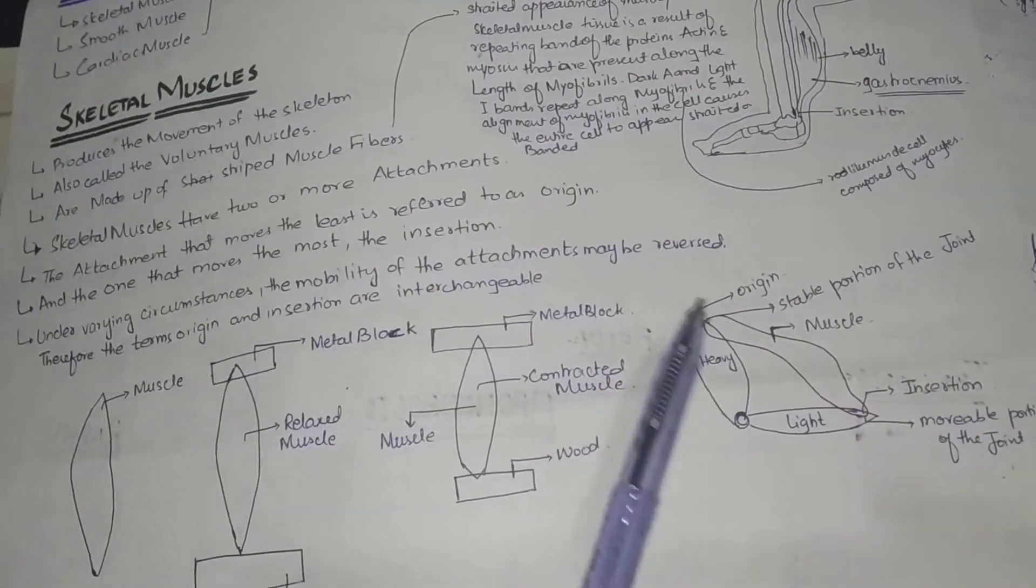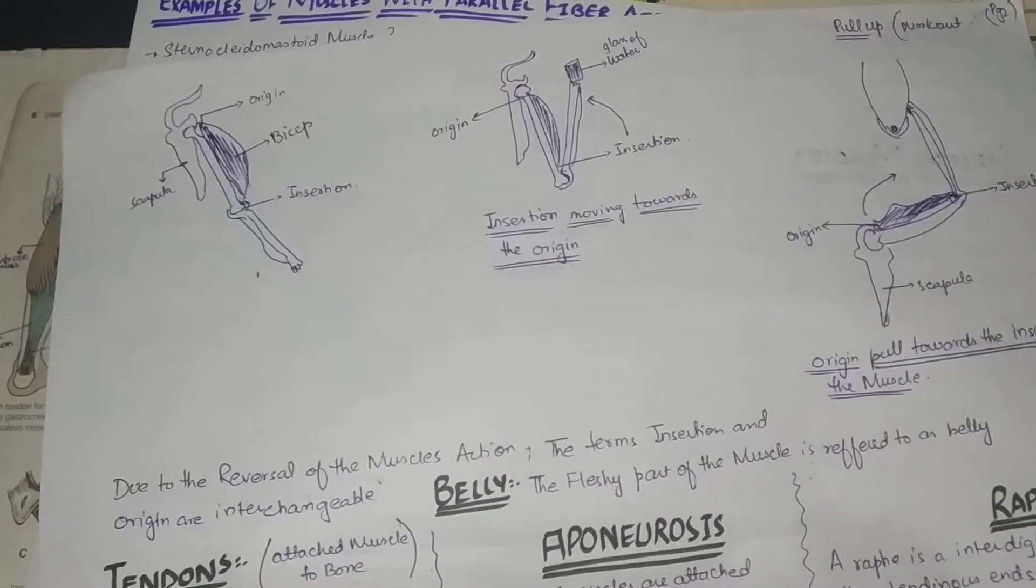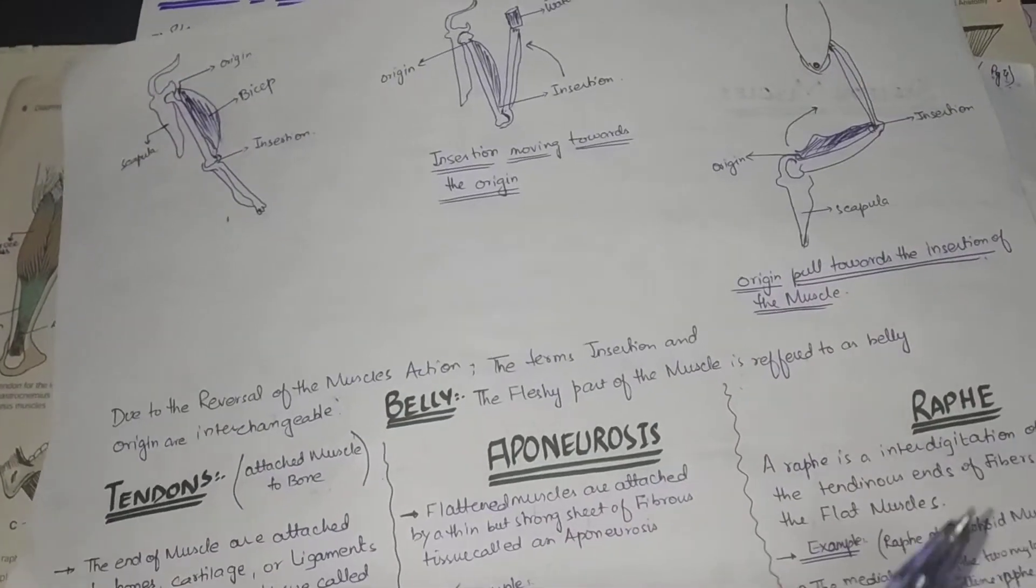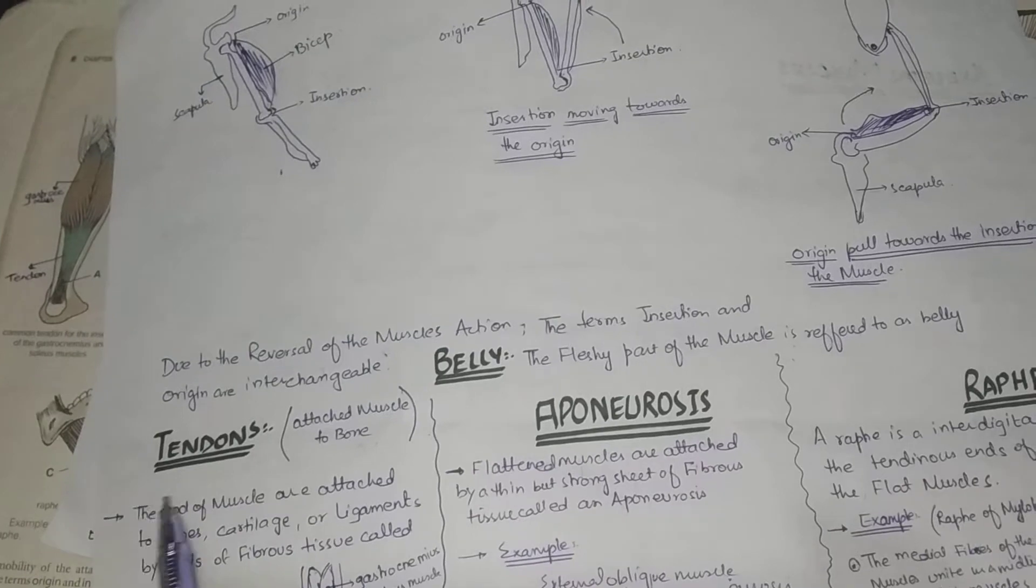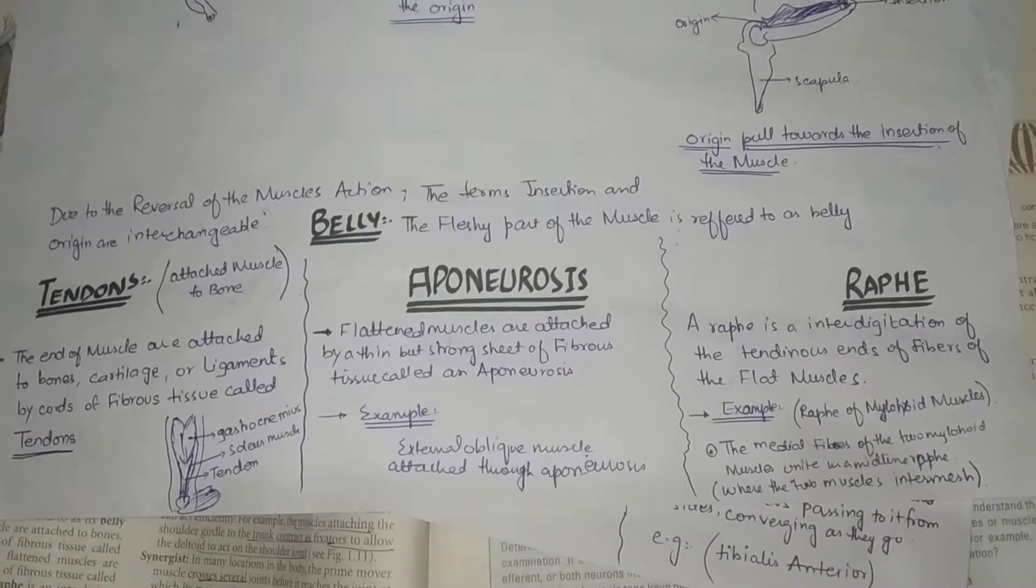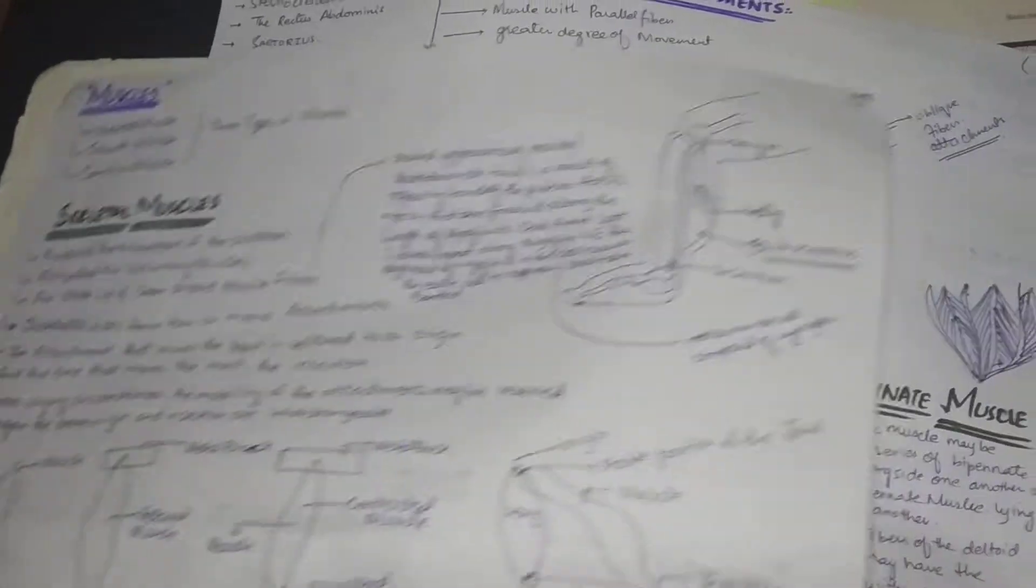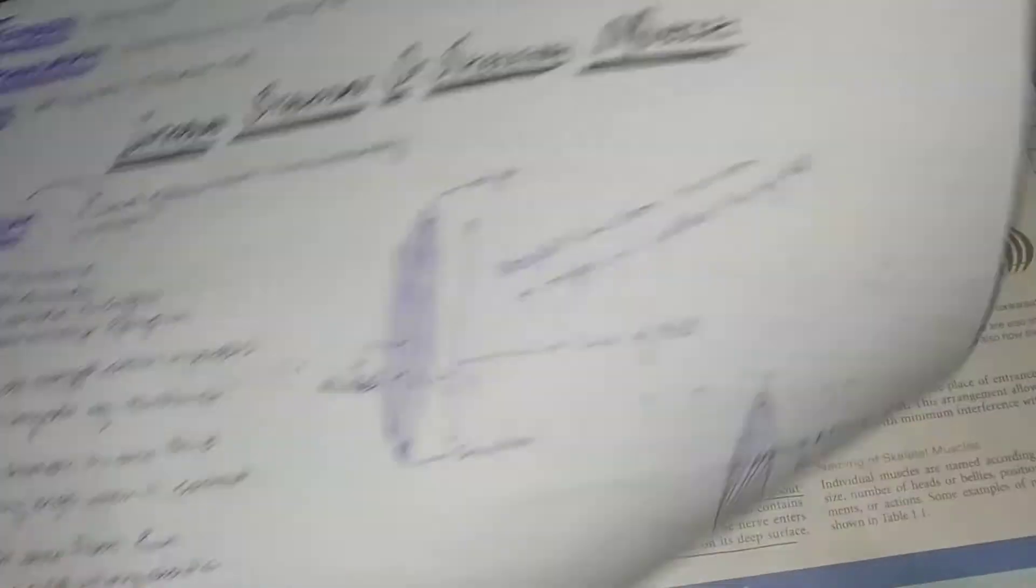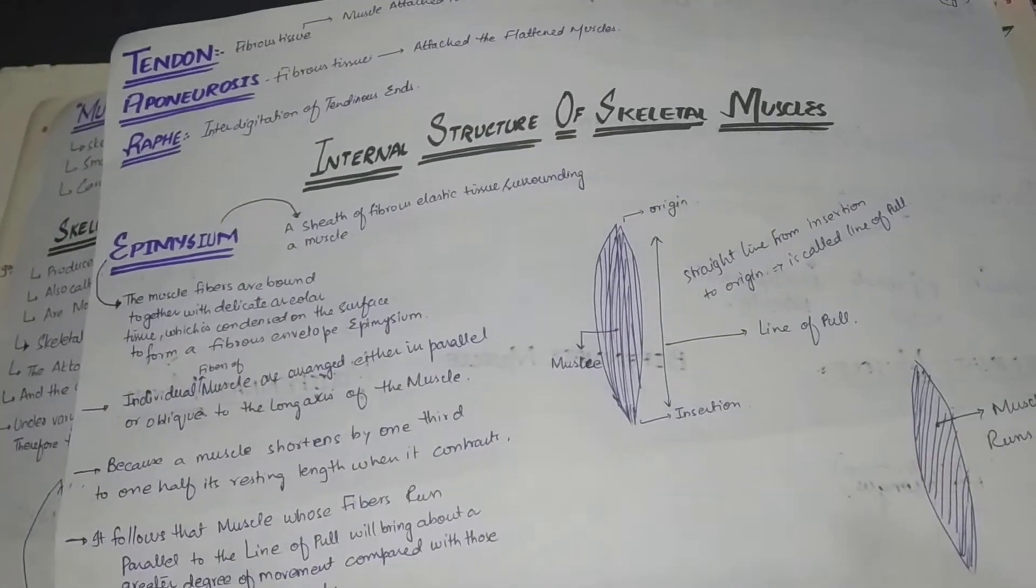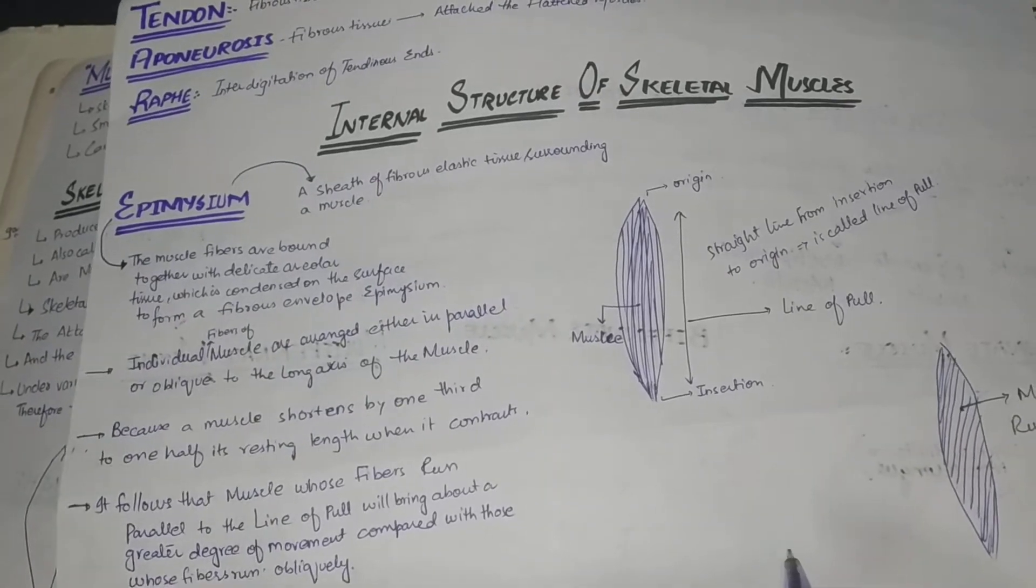In which direction the insertion and origin are interchanged. Then we have some terms used in Snell like tendons, aponeurosis, raphe. I have an example that I share with you. Then I have muscles attached to you. For example, there is a line of pull.